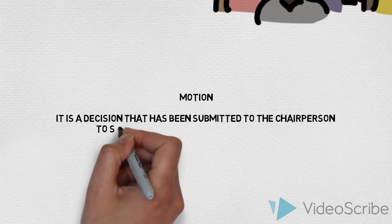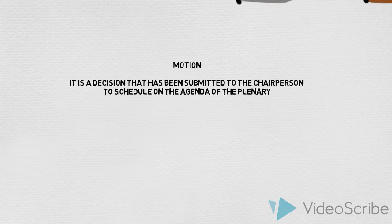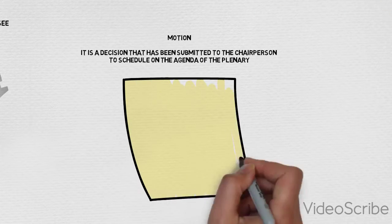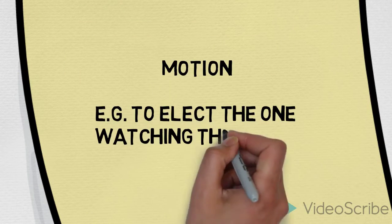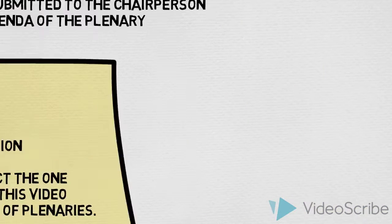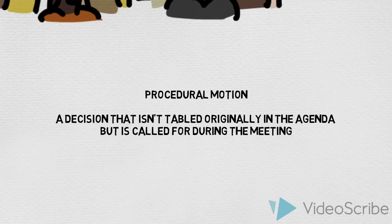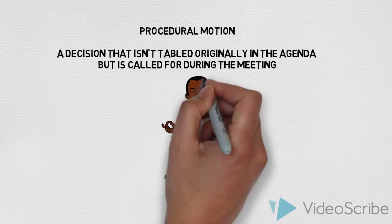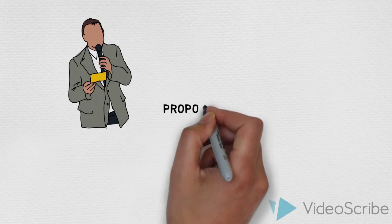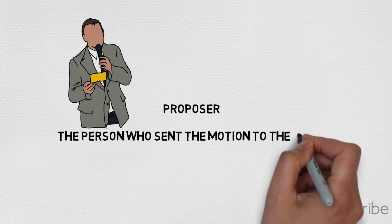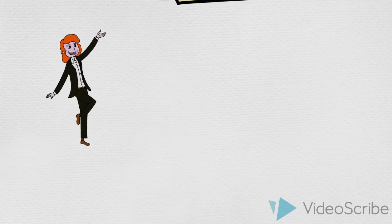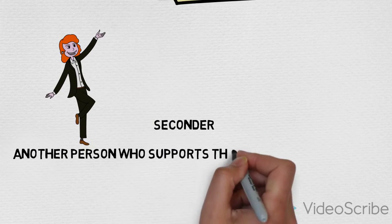A motion is a decision that has been submitted to the chairperson to schedule on the agenda of the plenary — for example, to elect the one watching this video as the master of plenaries. A procedural motion is a decision that isn't tabled originally in the agenda but is called for during the meeting. The proposer is the person who sent the motion to the chair. The seconder is another person who supports the proposer's motion.